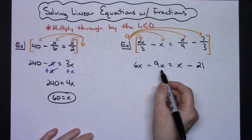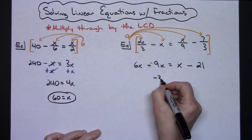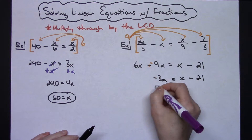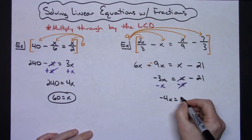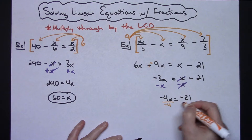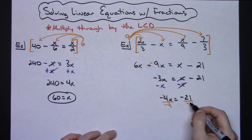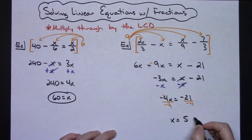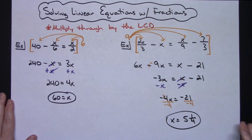On the left-hand side I can combine like terms: 6x minus 9x gives negative 3x. So I have negative 3x on the left and x minus 21 on the right. Subtracting x from both sides moves the x's to the left, giving negative 4x equals negative 21. Dividing both sides by negative 4, negative divided by negative is positive, giving 21 over 4. I can convert that to a mixed number: 4 goes into 21 five times with 1 left over, so the answer is 5 and 1 fourth — no need to round a decimal.